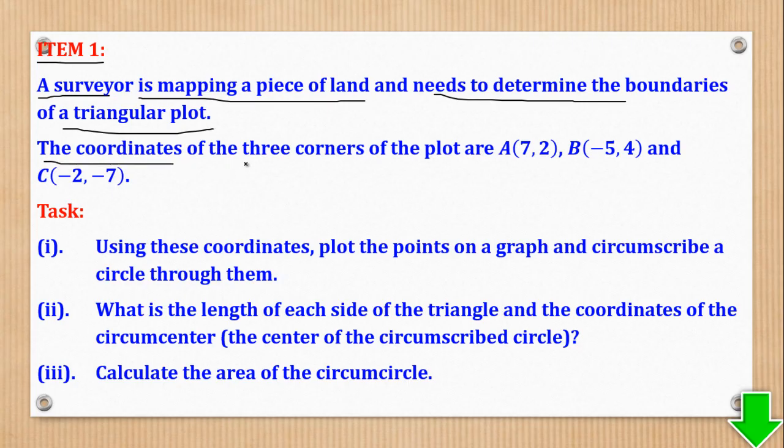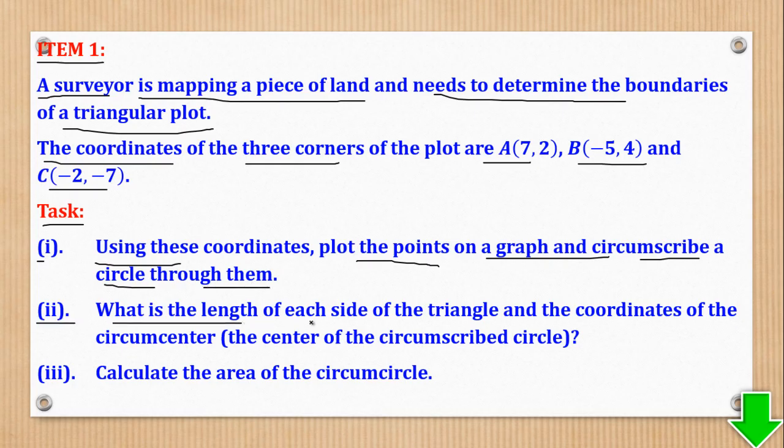The coordinates of the three corners of the plot are A(7,2), B(-5,4), and C(-2,-7). Task (i): Using these coordinates, plot the points on a graph and circumscribe a circle through them. (ii): What is the length of each side of the triangle and the coordinates of the circumcenter? (iii): Calculate the area of the circumcircle.